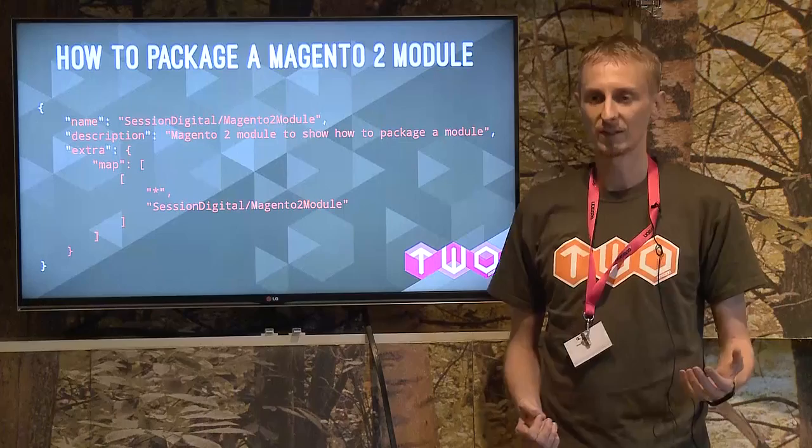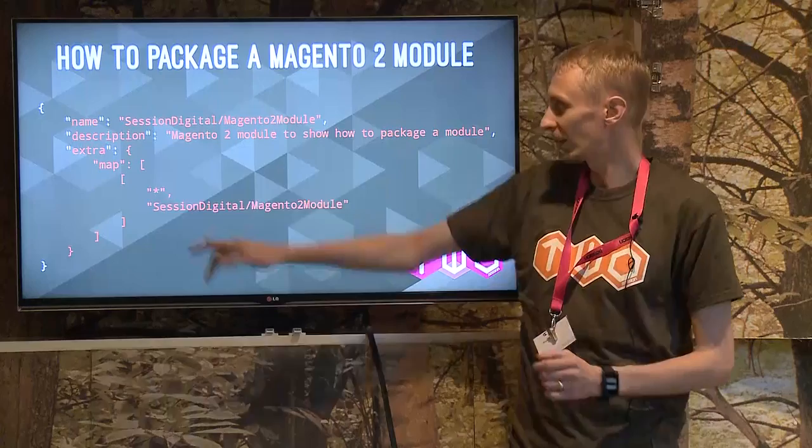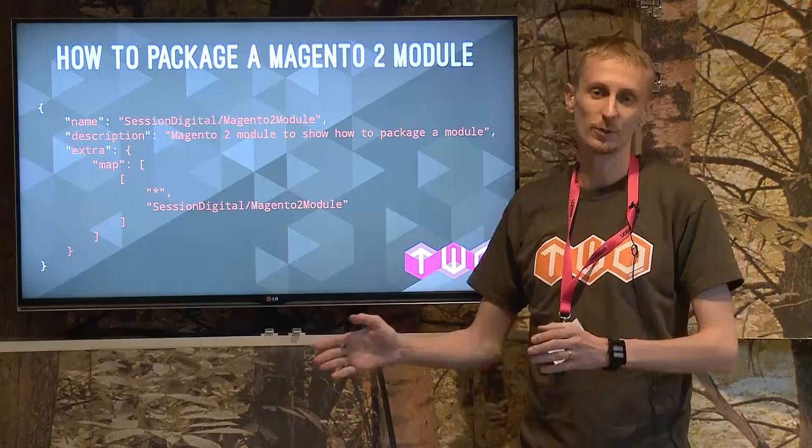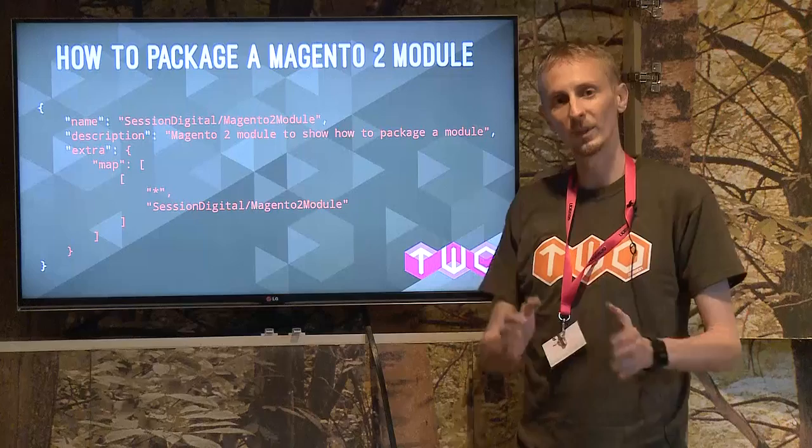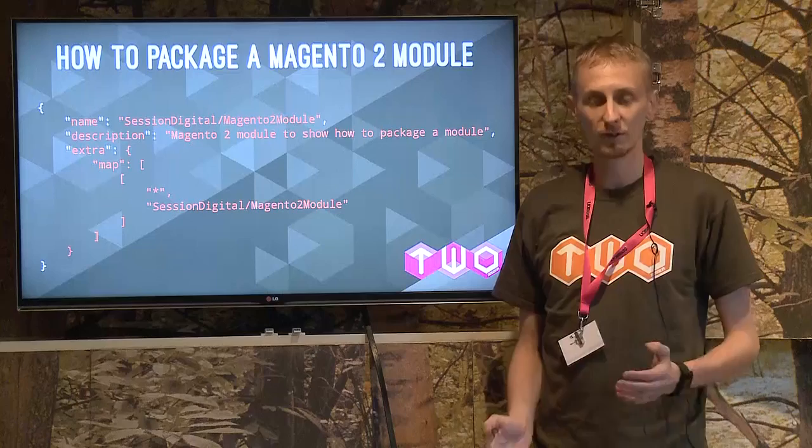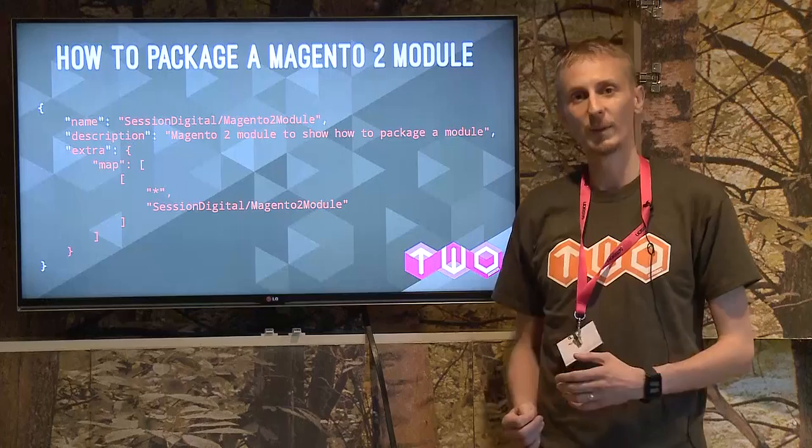What we needed to do was apply the extra map notation, which said: here are the files in our source directory, please copy them into the app code directory under the Session Digital Magento 2 module namespace. So when we ran a composer install, it copied those files into the correct location. For Merchant Beta, that's working fantastically well. There are no problems even on installing modules because Composer can understand how to take out those mappings and remove files as needed.